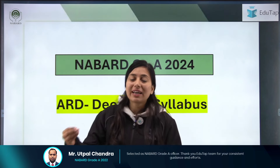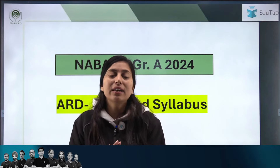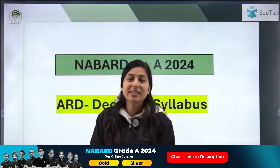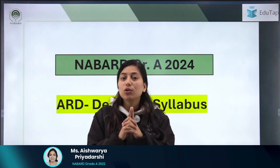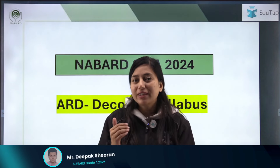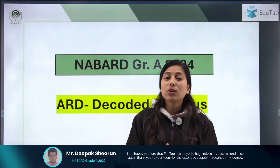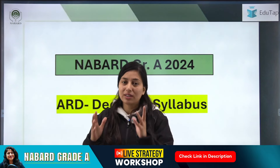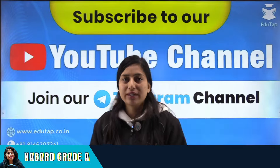So how can you approach this subject? First, you have to see the syllabus. Just reading the syllabus is one thing, but decoding the syllabus is another. Today I am going to decode the ARD syllabus for you, and we will also see how to decode it with the help of previous year questions — specifically the 2023 questions asked in Agriculture and Rural Development. We will identify the important chapters and topics.